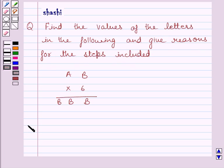find the values of the letters in the following and give reasons for the steps included. Let us now move on to the solution. First of all, we will rewrite the given puzzle. That is, AB multiplied by 6 gives BBB.